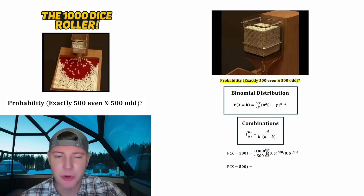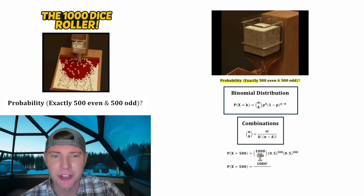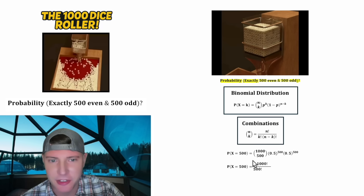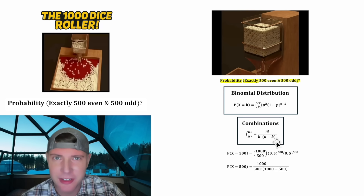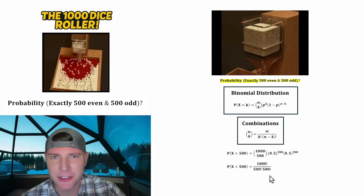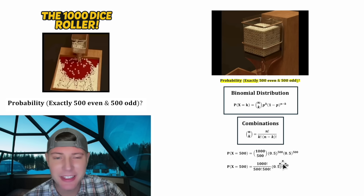For the next step, we can rewrite this 1,000 choose 500 using these notes here. It'll be the n factorial on top, which is 1,000 factorial. On the bottom, we have the k factorial, which is 500 factorial, and then n minus k factorial would be 1,000 minus 500 factorial, which is 500 factorial. And for the 0.5 to the 500 and the other 0.5 to the 500, we can add these two exponents to give us 0.5 to the 1,000.